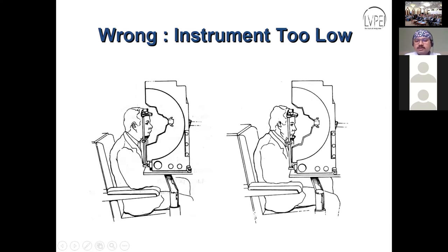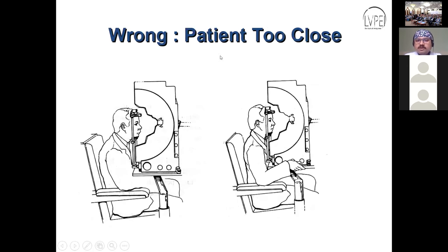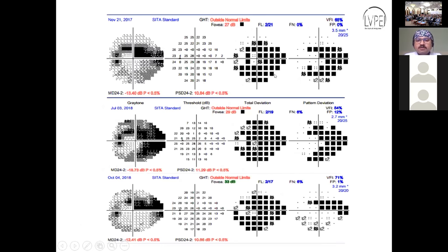When the machine is too low, chin displacement causes a superior defect. If the patient is sitting too close to the machine, ergonomically they won't be comfortable. Since this is a long test, the patient needs to be comfortable; otherwise they will try to finish early by giving random responses, leading to various artifacts seen in the HVF report.